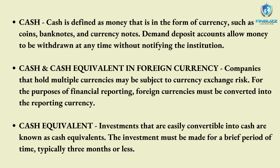Another type is cash equivalents. Investments that are easily convertible into cash are known as cash equivalents. The investment must be made for a brief period of time, typically three months or less. An investment should be recorded in the account labeled other investments if it matures in more than three months. Cash equivalents have to be very liquid and simple to sell. The market price of all cash equivalents must be known and should not fluctuate prior to redemption or maturity; it cannot be anticipated that the value of cash equivalents will fluctuate significantly.